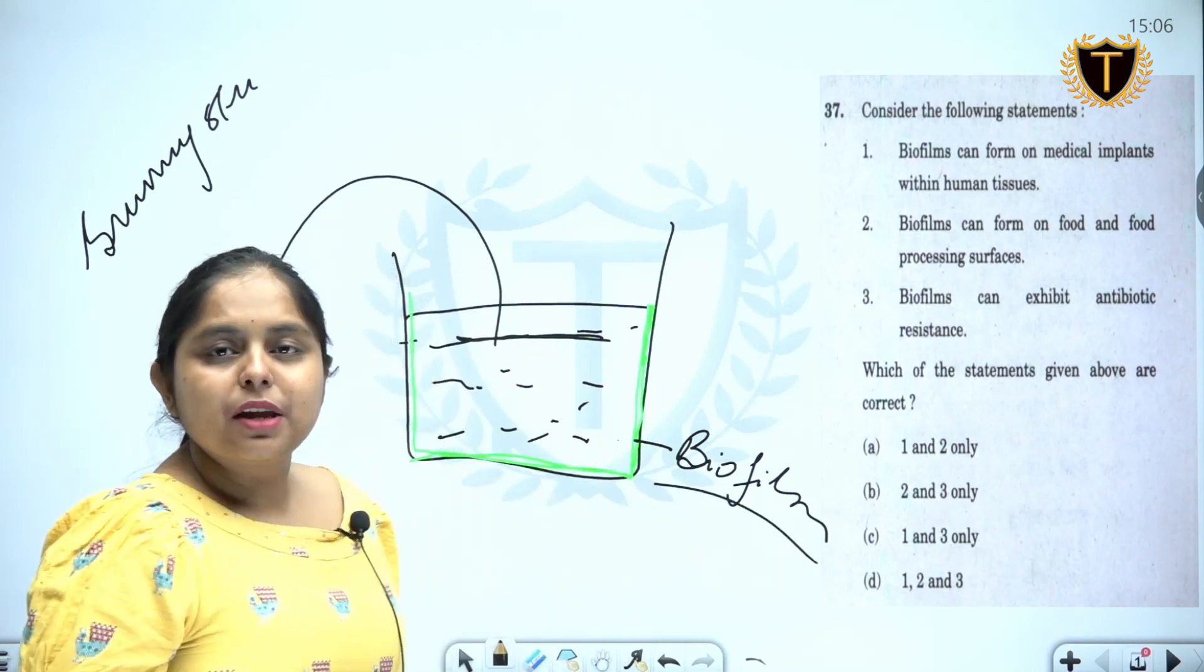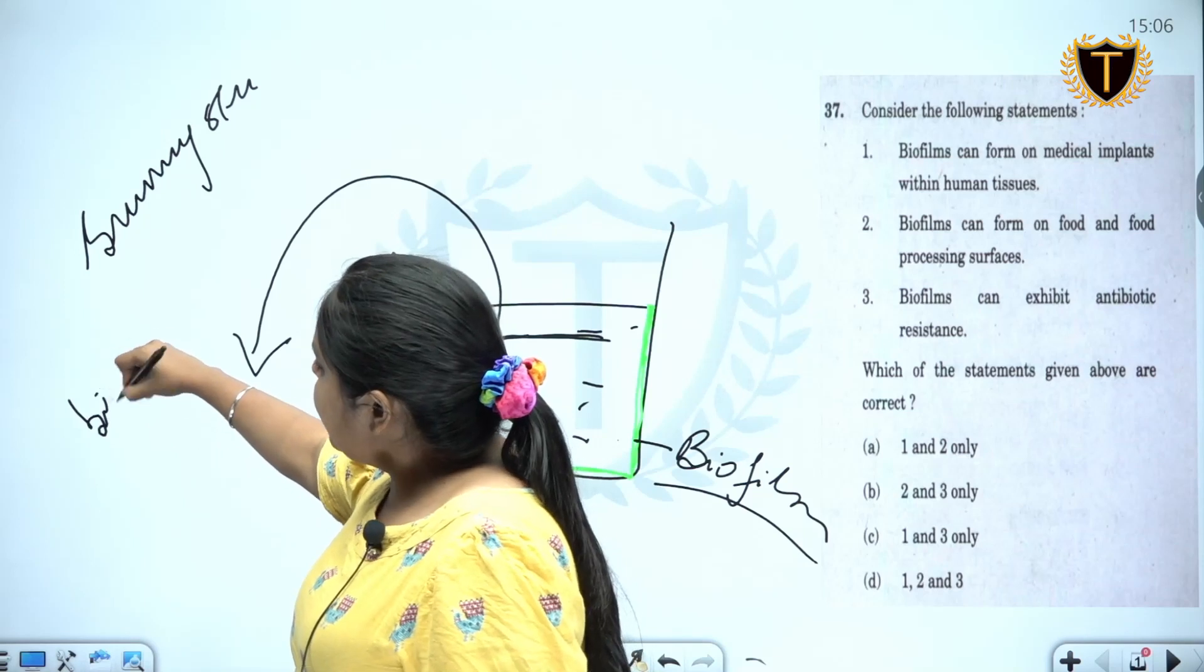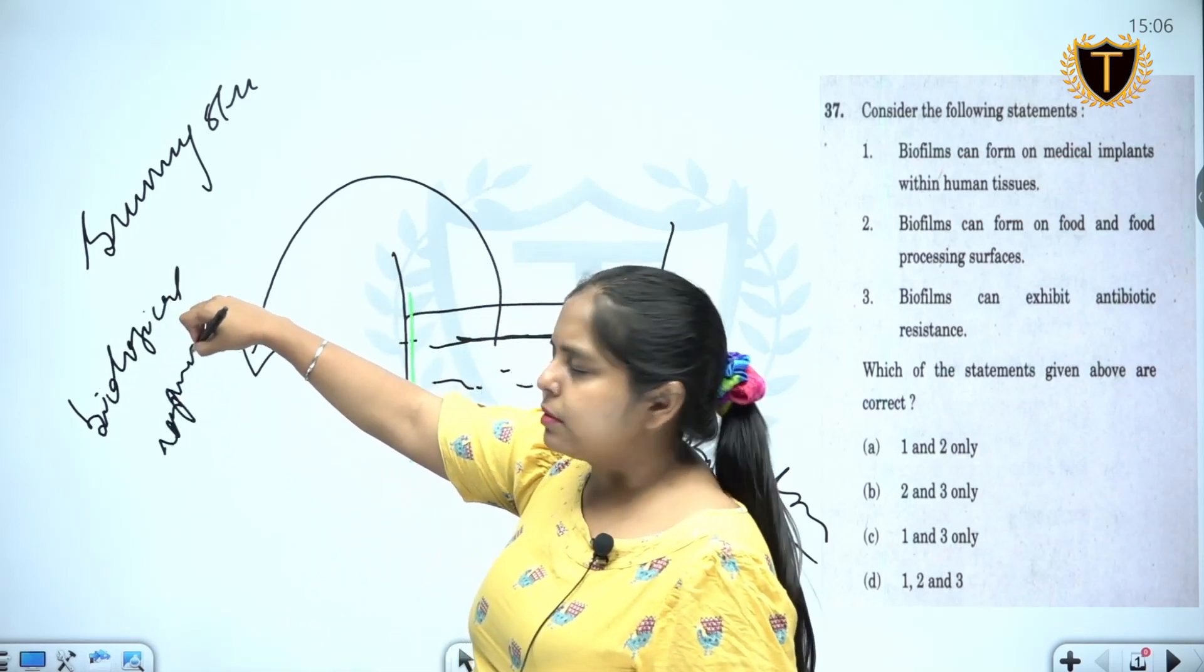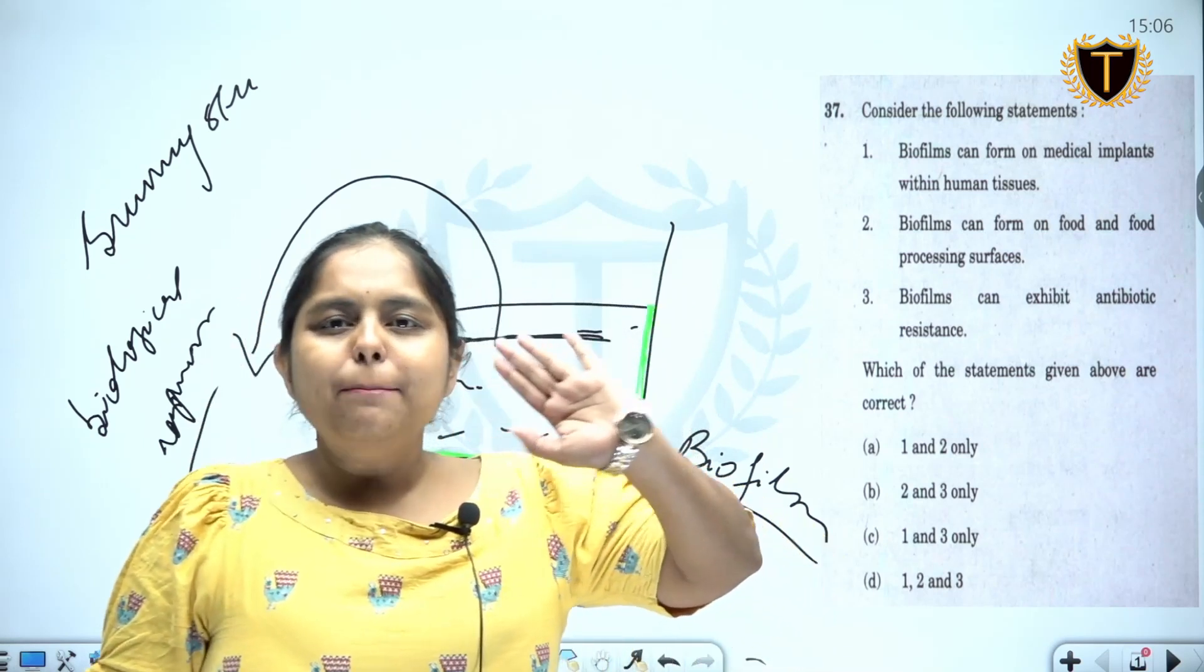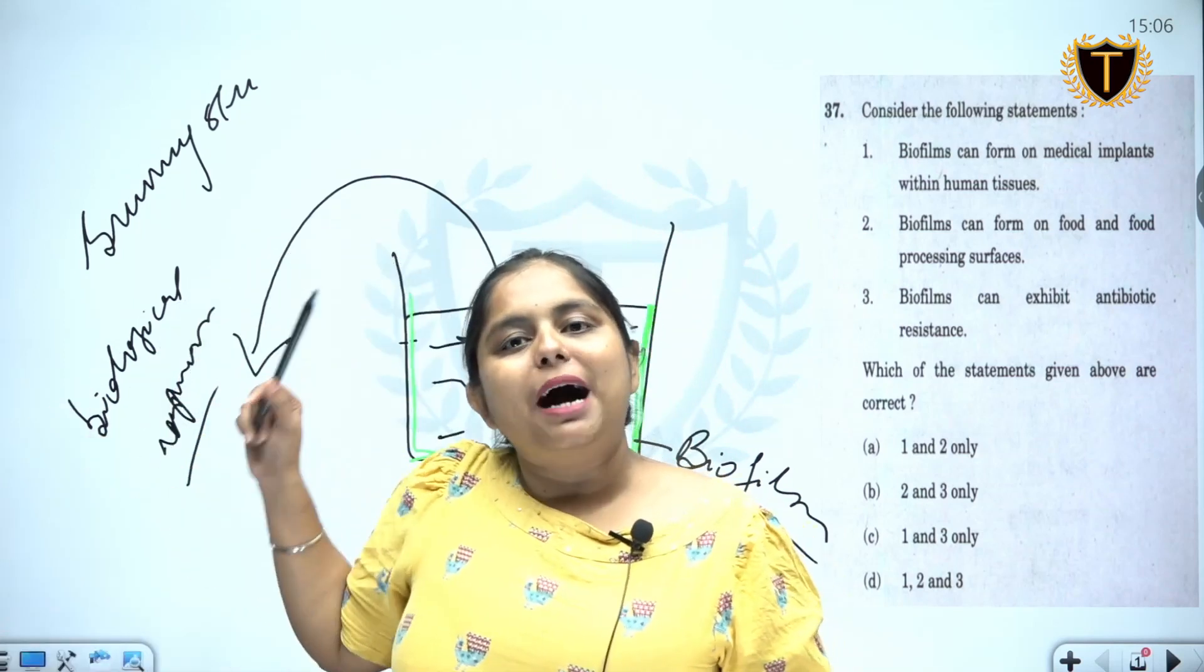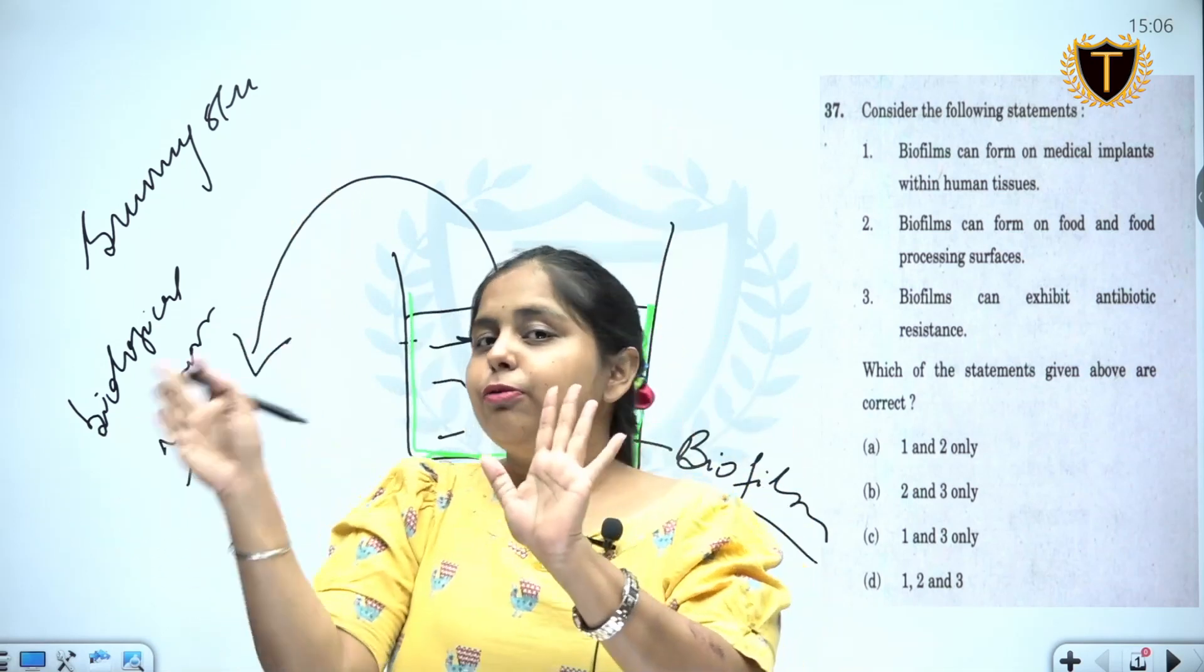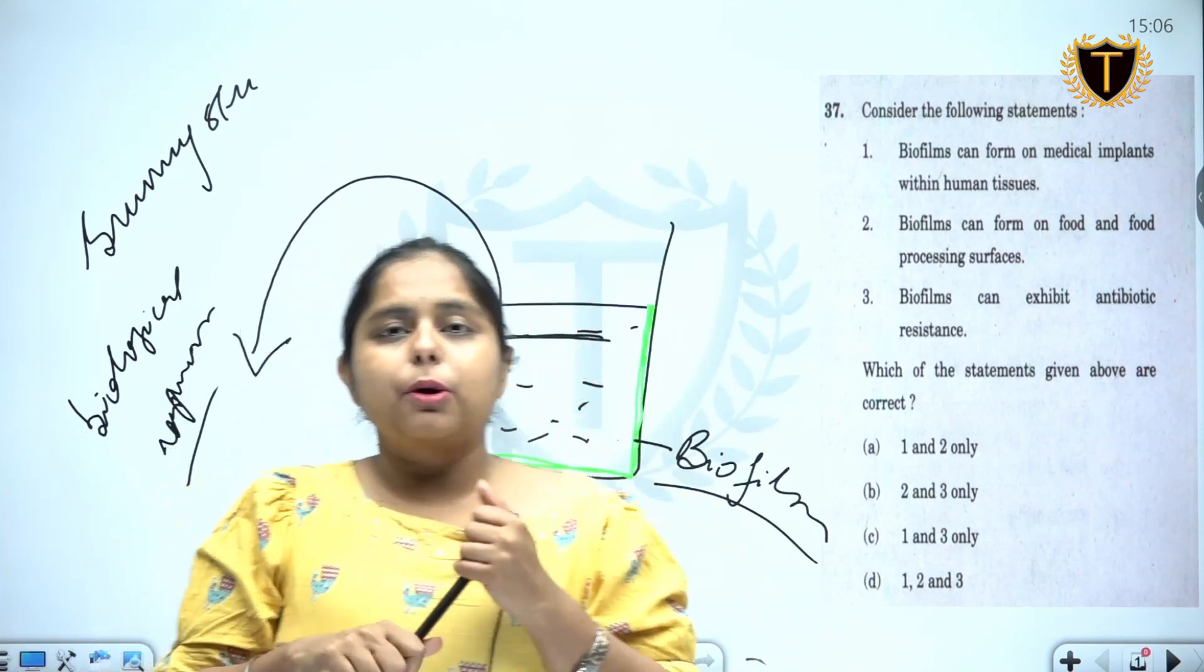And this is what is a biofilm. Now as usual we are going to break these words. What is the meaning of 'bio'? There is involvement of some biological organism. What is a 'film'? A film is a laminated covering of any surface. So biofilms are biological organisms which are forming a kind of layering, a lamination over any surface that we talk about.